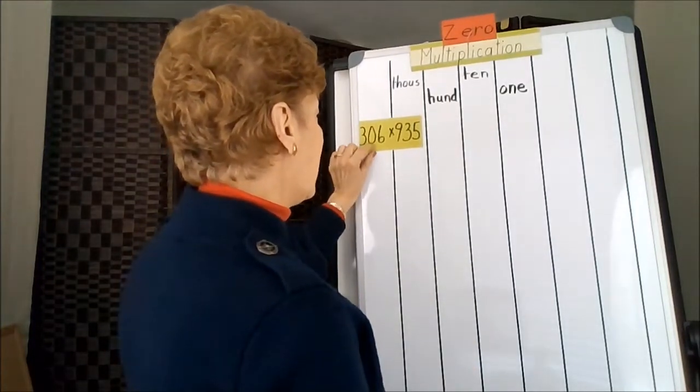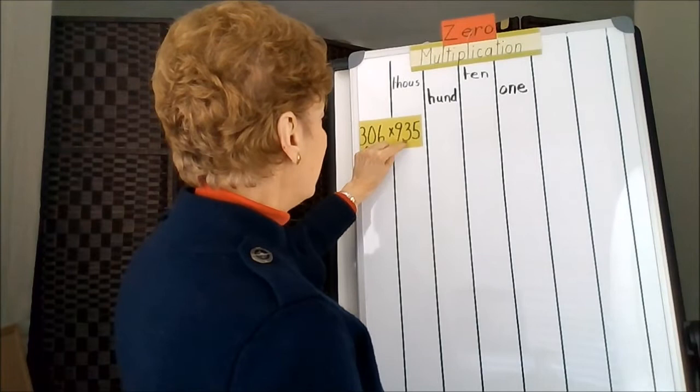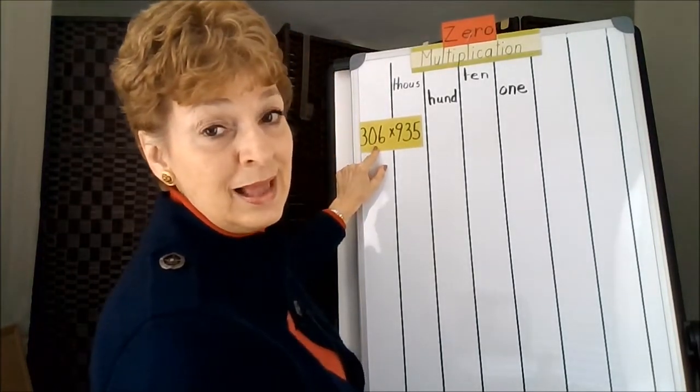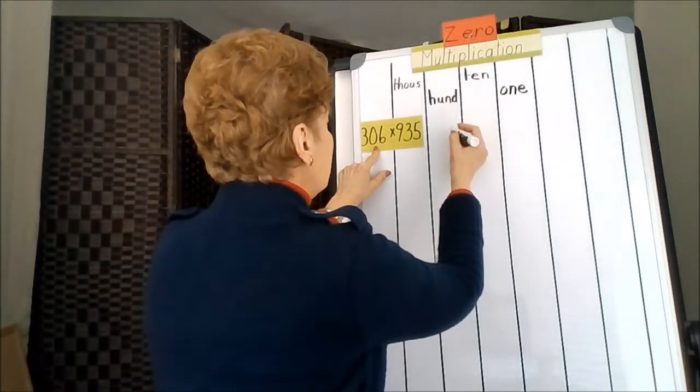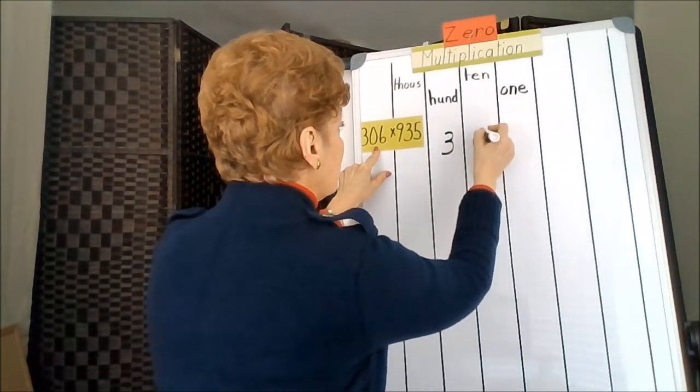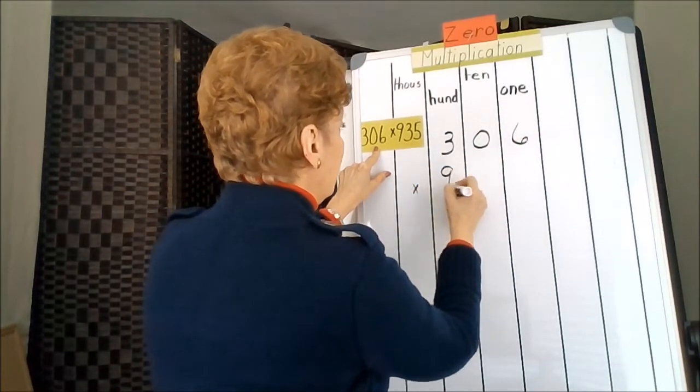Here's 306 times 935. This time I want to keep my 0 in the middle on the top because this is the way it would look. 306 times 935.